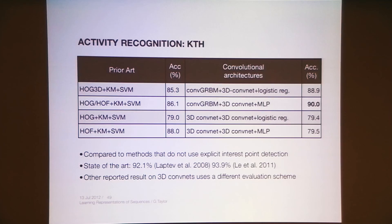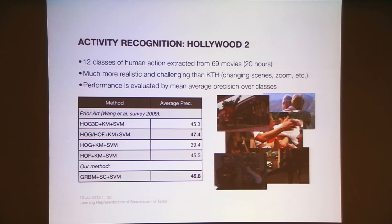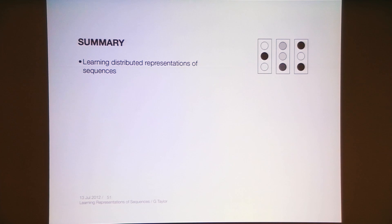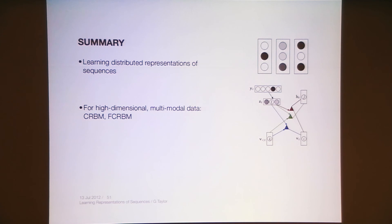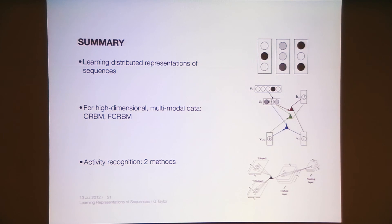That's it for the first part of the tutorial. We talked about learning distributed representations and why that's a good thing compared to prior models like HMMs and LDS. We extended RBMs to conditional RBMs and factored conditional RBMs to integrate context variables. Then we looked at a couple of activity recognition methods. I'll come back and talk about similarity learning after the break.